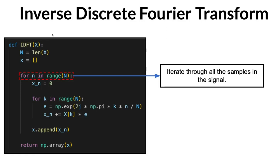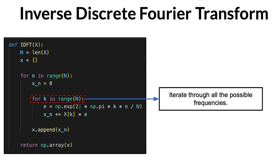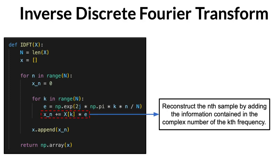Then, we try to reconstruct each sample within the signal by iterating through the frequency spectrum, generating the corresponding complex number for the frequency k, multiplying it with the corresponding complex number created by the discrete Fourier transform for the frequency k, and adding the result.